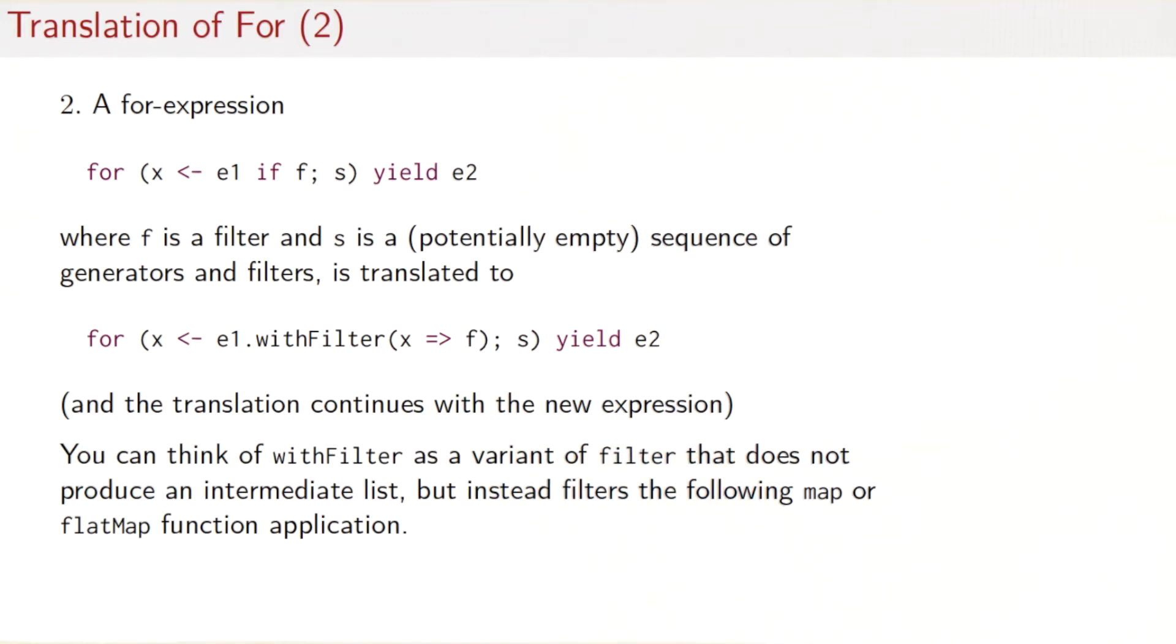WithFilter as a first approximation you can read it like filter. So what happens here is that the generator will be reduced to all those elements that pass the condition f. In fact, withFilter is a lazy variant of filter that means it doesn't immediately produce a new data structure of all the filtered elements. That would be wasteful. What it does instead is it remembers that any following call to map or flatMap has to be filtered by the function f so it's essentially a smarter version of filter.